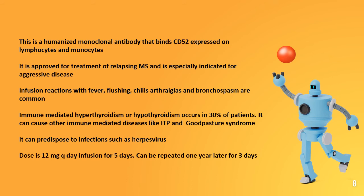Immune-mediated hyperthyroidism or hypothyroidism occurs in 30% of patients. It can cause other immune-mediated diseases like ITP and Goodpasture syndrome. It can predispose to infections such as herpes virus. The dose is 12 milligrams per day as an IV infusion for five days, which can be repeated one year later for three days.